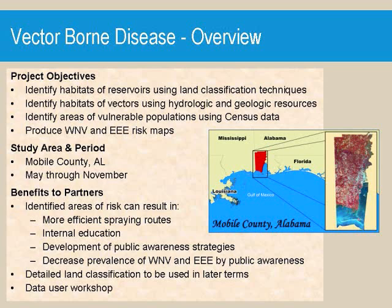Our partners could benefit from the study in the following ways. More efficient spraying routes could be implemented. Public awareness campaigns could be conducted for preventative measures, which in turn could decrease the prevalence of West Nile virus and Triple E in the area. The detailed land classification maps created in the study could be used in later studies. A detailed workshop would be conducted with the partners so that they knew exactly how to use the programs and data in a way that would serve them the best.